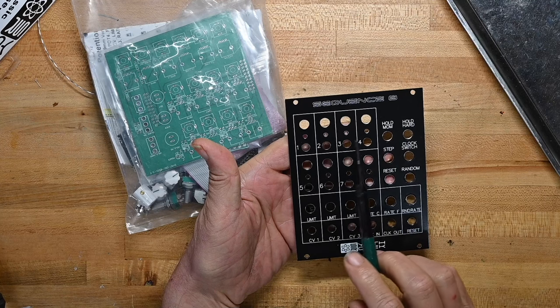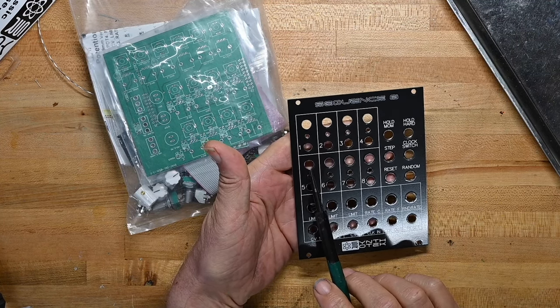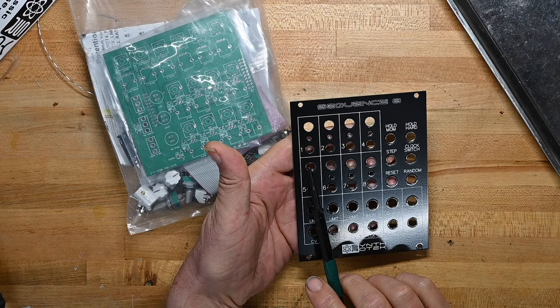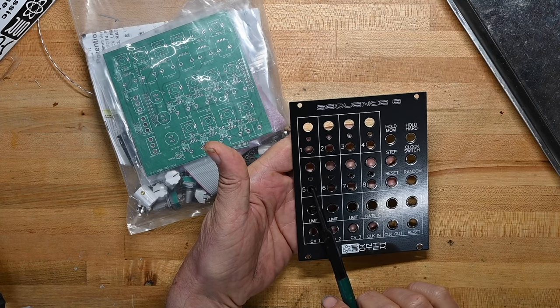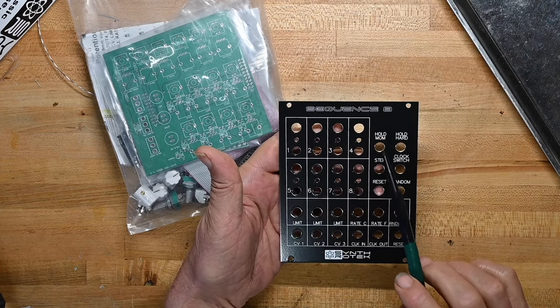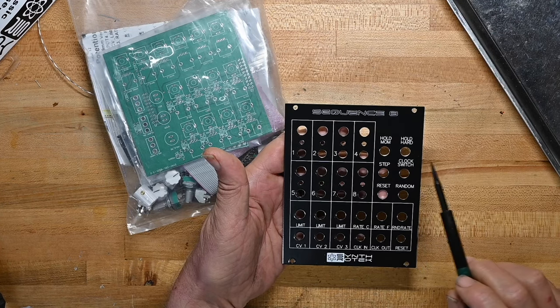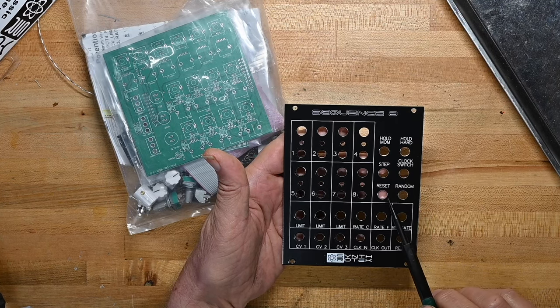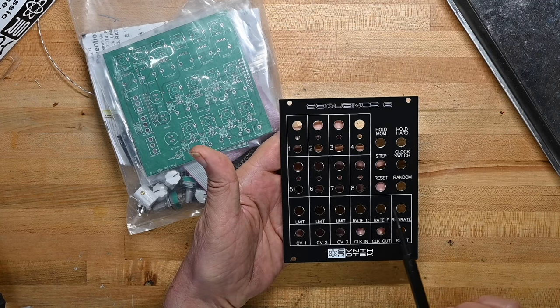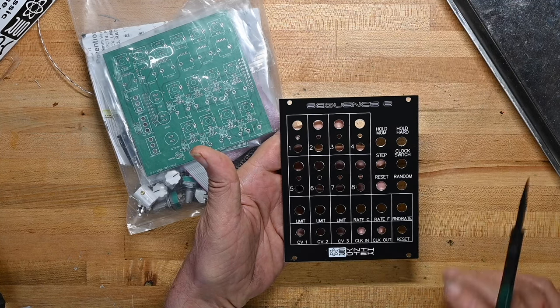Sequence 8. Looks like we've got eight steps. Maybe that's a pot for the note value. Probably some LEDs there. Hold Mom - I don't think that's telling you to appreciate your mother, I think that's hold momentary. Hold hard, Step, Clock, Switch, Reset. Random's always good. Limit, Rate, Random Rate. CV1, CV2, CV3. Clock in, clock out, and reset.